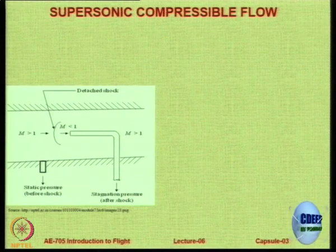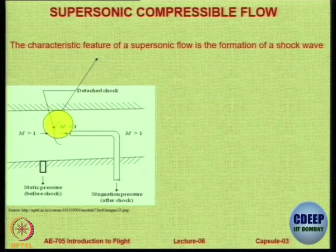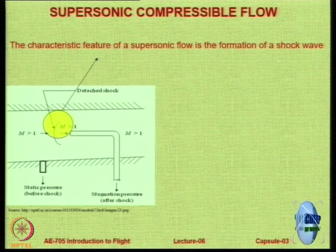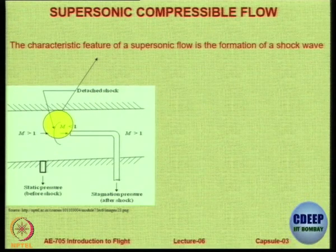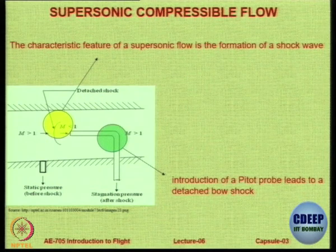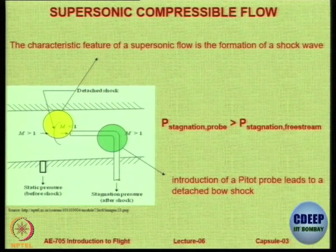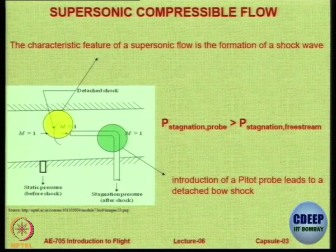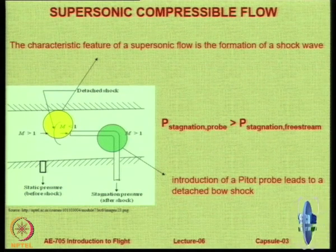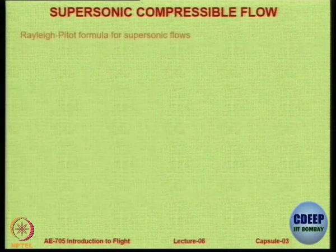Right now you have to assume what I am saying; in the next session I am going to elaborate in more detail. Essentially, in supersonic flow there is going to be formation of something called a shock wave. If it is a blunt or fairly rounded body, this shock is going to be a detached shock located ahead of the body. If you bring in a pitot tube, there is going to be a detached shock in the front. The probe stagnation pressure is going to be more than that of the free stream, because behind a shock there is an increase in pressure. The reading will therefore be wrong, because you are not reading the free stream pressure but the pressure behind the shock.